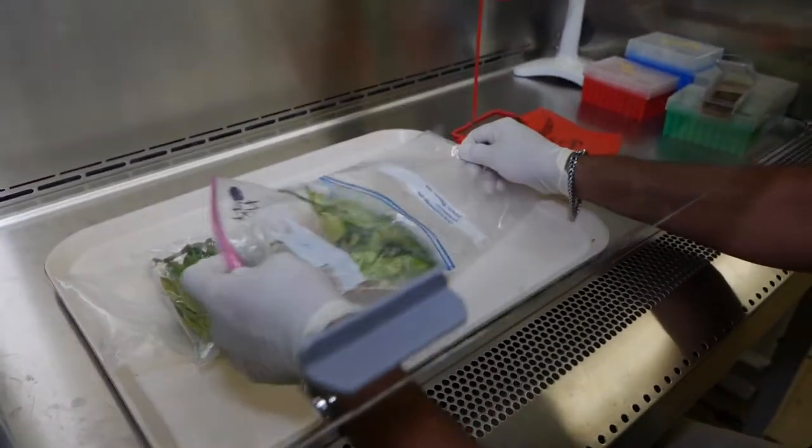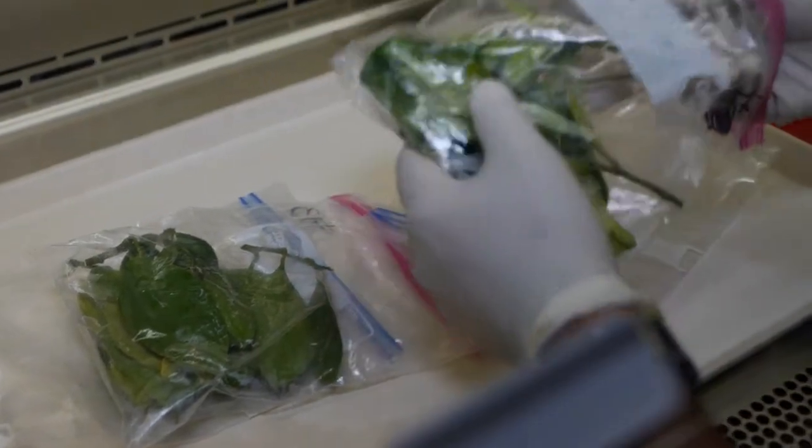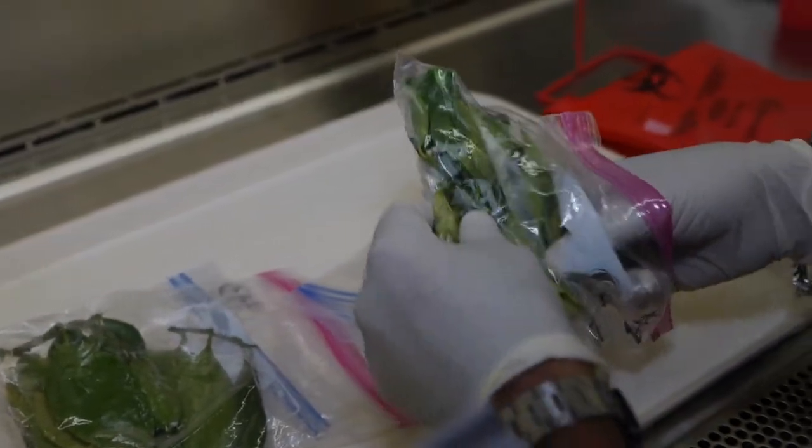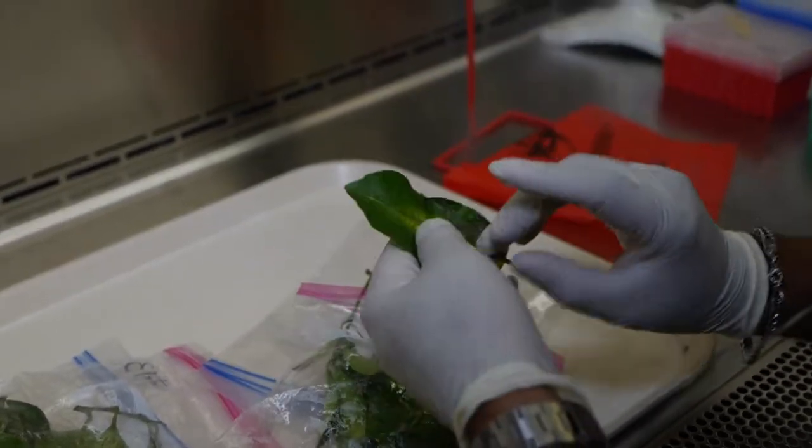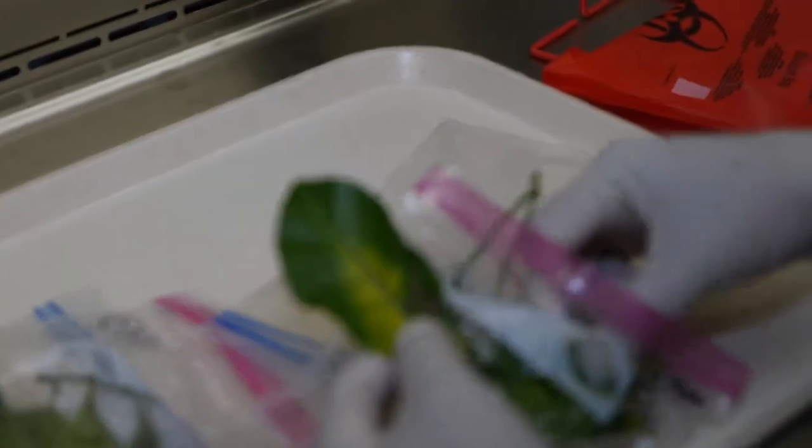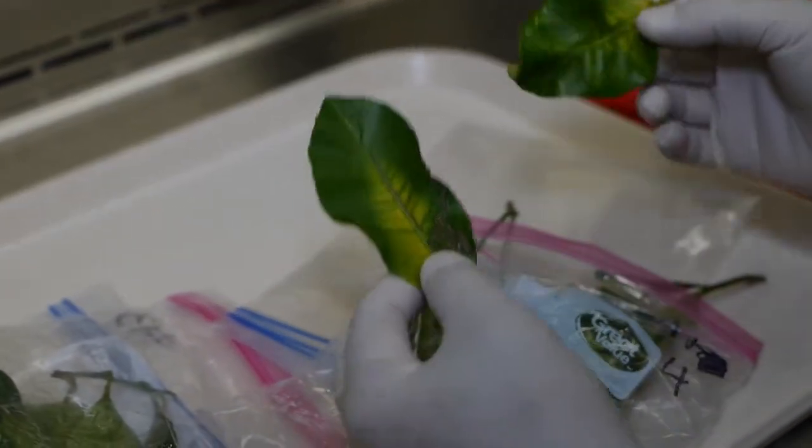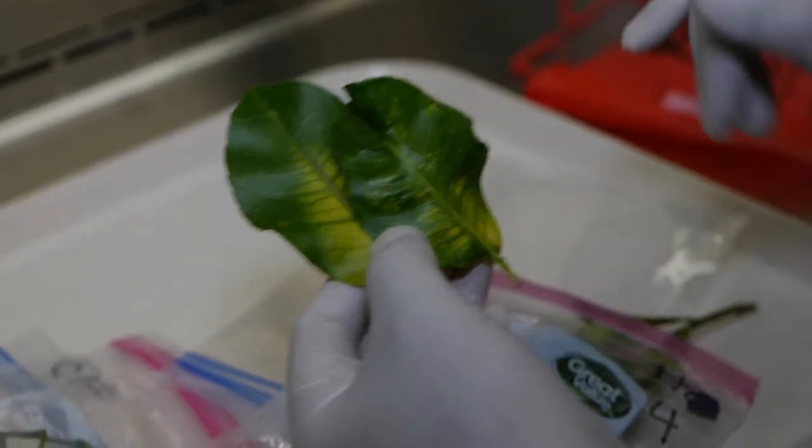Here I'm just visually examining it. The test we're going to run for it is a molecular test, but I want to make sure we're looking at something symptomatic for citrus greening. You can see this type of blotchy mottling here and here.